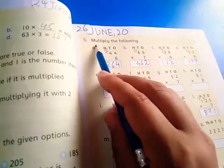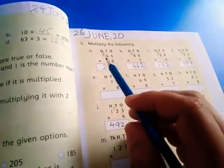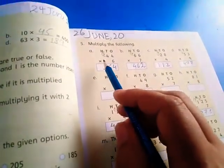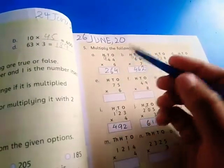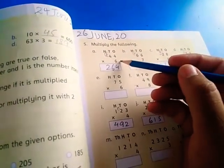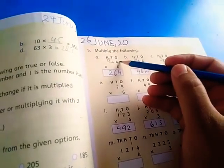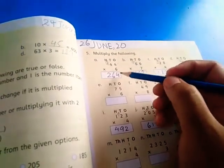Question number 5. Multiply the following. 44 multiply by 6. Recall the table of 6. 6 fours are 24.